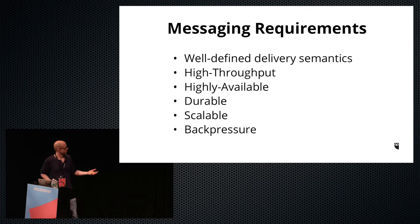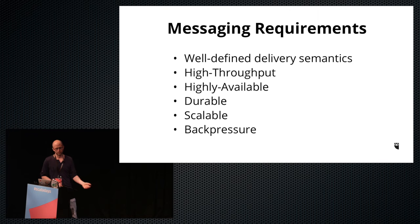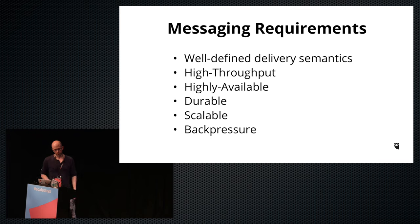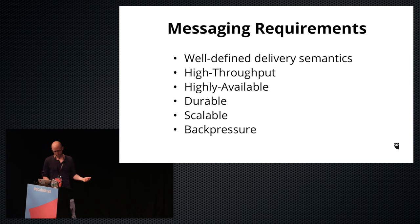So what kind of requirements would we want in an asynchronous messaging solution? It needs to have well-defined delivery semantics — at least once, at most once, or exactly once, since each has different trade-offs. You want it to be high throughput — we don't want to block callers; we want messages to send fast. We want high availability so that a broken part doesn't stop the system. We also want durability so that a failure doesn't cause data loss. We want it to be scalable — able to grow capacity over time. And really importantly, we want back pressure: a slow consumer should be able to handle data coming from a fast producer.